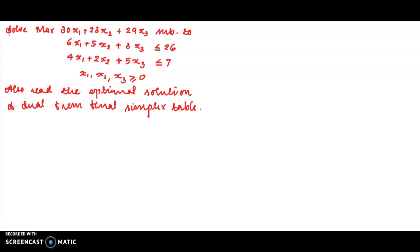Solve, maximum is 30x₁ plus 23x₂ plus 29x₃ subject to 6x₁ plus 5x₂ plus 3x₃ less than or equal to 26, 4x₁ plus 2x₂ plus 5x₃ less than or equal to 7, x₁, x₂, x₃ greater than or equal to 0. Also, read the optimal solution of the dual from the final simplex table.